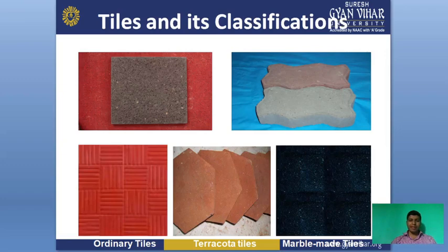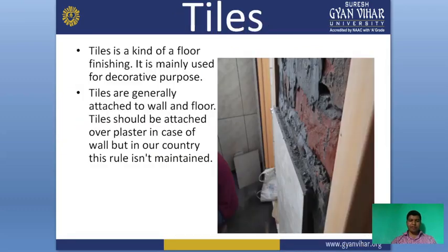After completing the plaster process, we go for tiles. These are pictures of tiles and we will also discuss the classification of tiles — examples like ordinary tiles, tractor tiles, and marble tiles used after the plastering process. A tile is a kind of floor finishing mainly used for decorative purposes. Tiles are generally attached to walls and floors and should be attached over plaster in the case of walls.